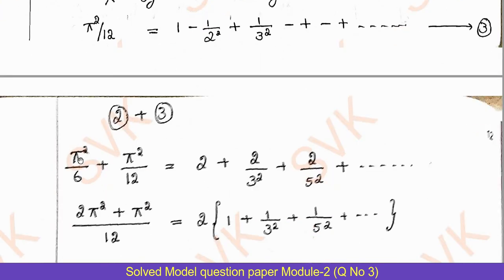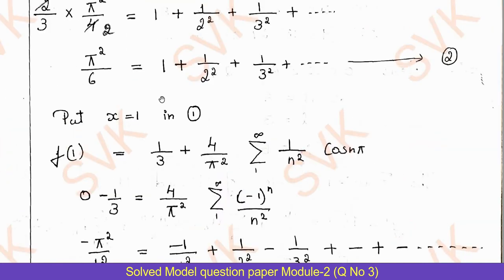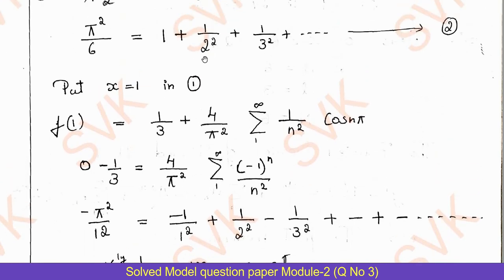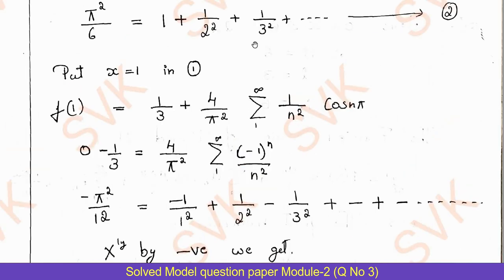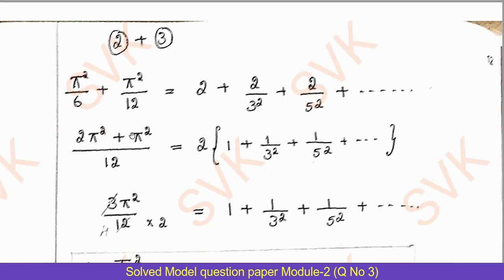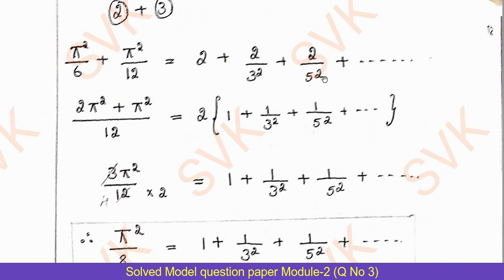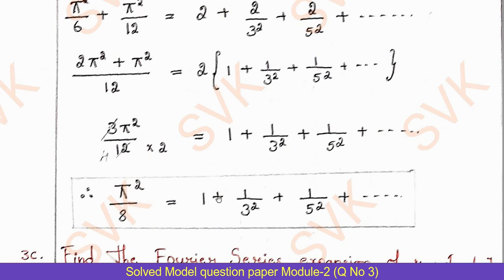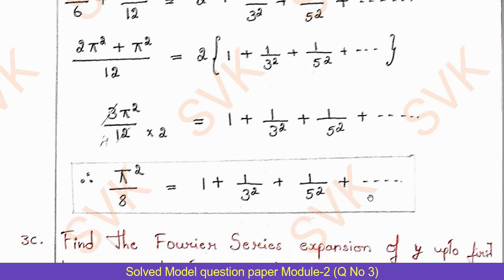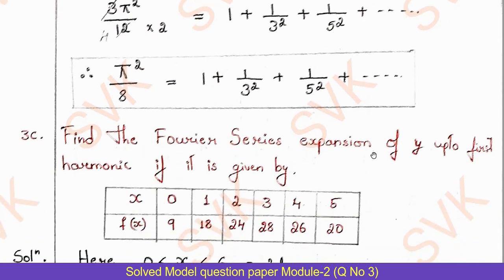Adding equations (2) and (3): π²/6 + π²/12 = (1+1) + (1/2² - 1/2²) + (1/3² + 1/3²) + (1/4² - 1/4²) + (2/5²) + ⋯. The even terms cancel and odd terms double. Taking 2 common: 3π²/12 = 2(1 + 1/3² + 1/5² + ⋯). Therefore π²/8 = 1 + 1/3² + 1/5² + ⋯, which is the required result.